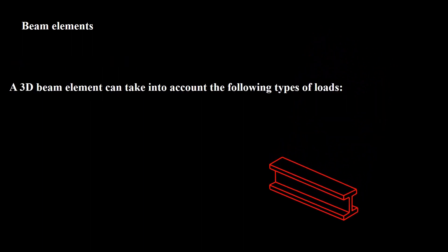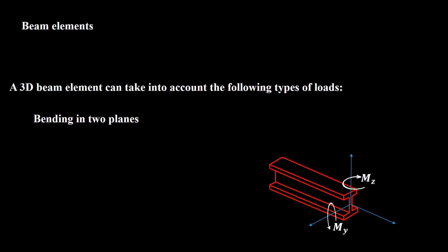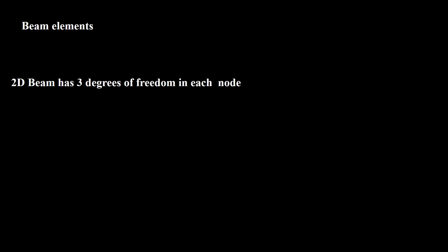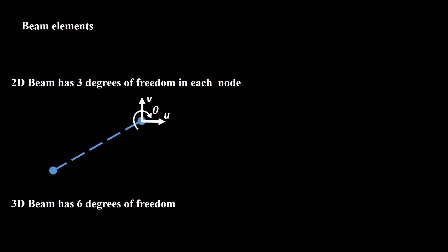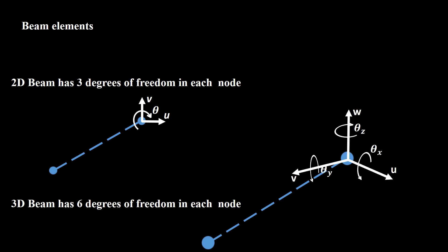A 3D beam element can take into account bending in two planes, torsion, and axial tension or compression. A beam element in two-dimensional space has three degrees of freedom: two translations and one rotation. In a three-dimensional beam, each node has six degrees of freedom: three translations and three rotations.